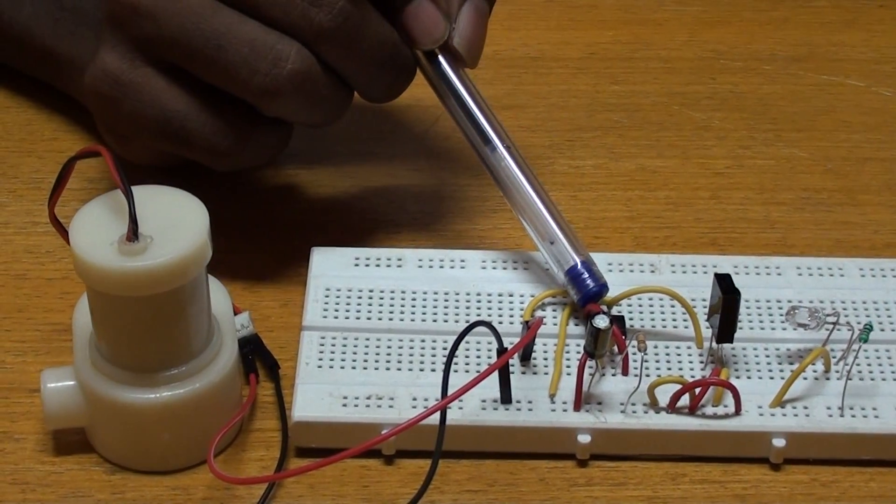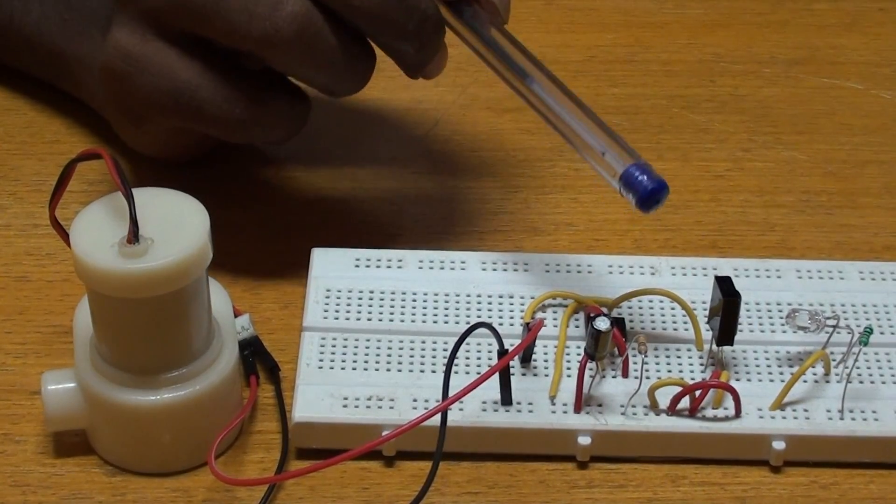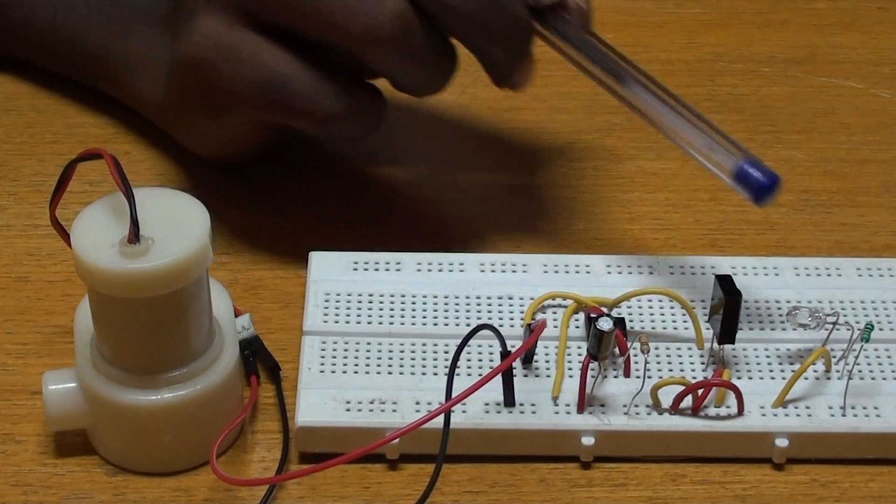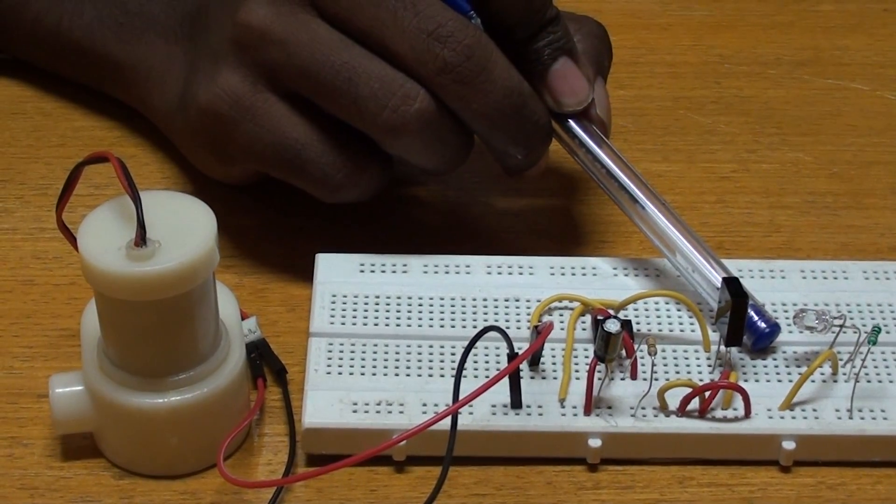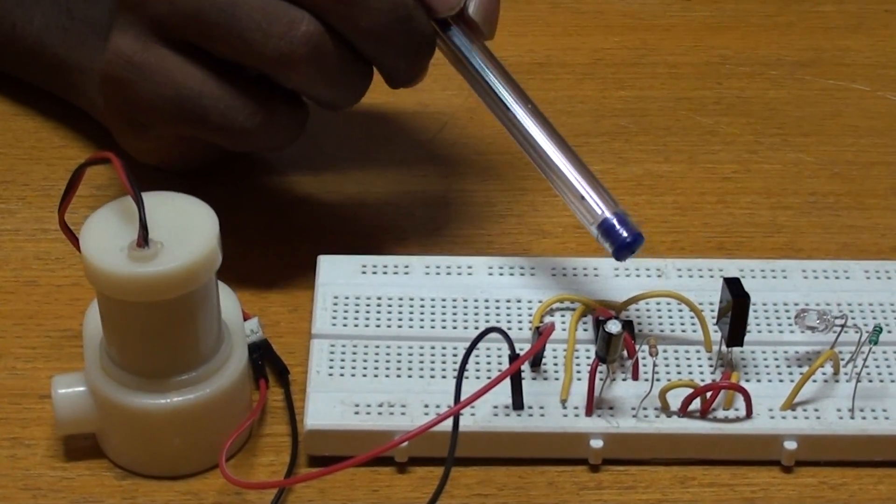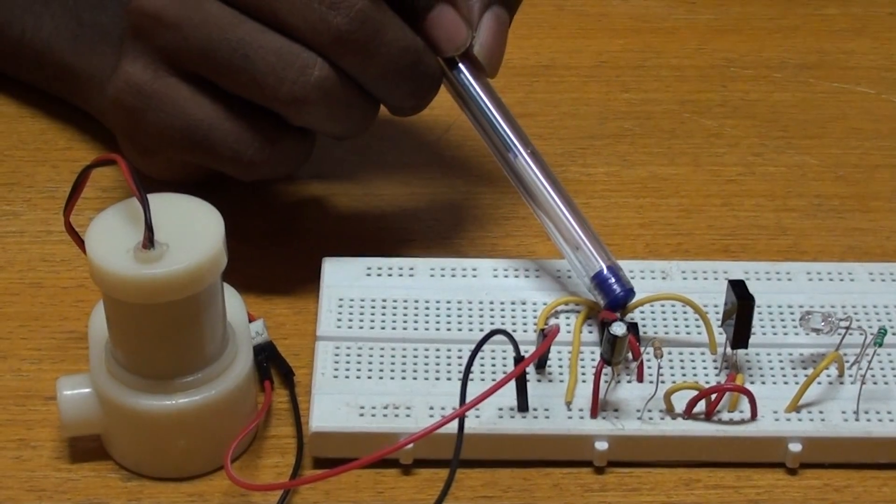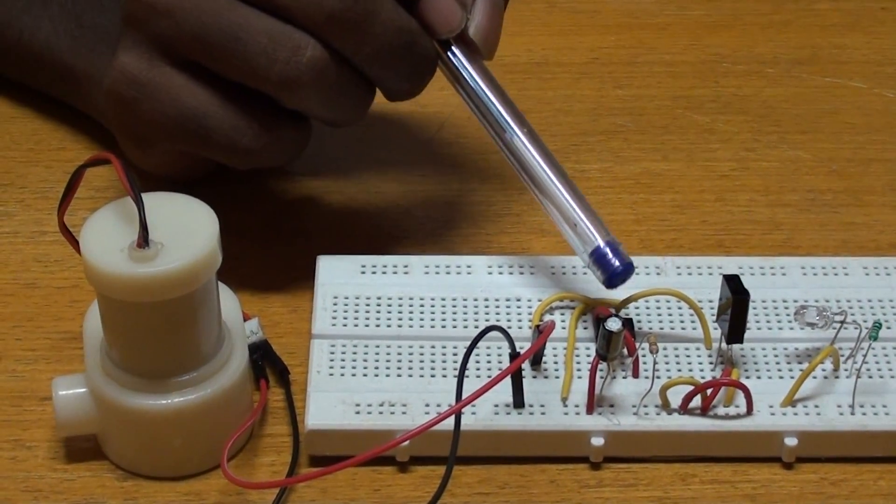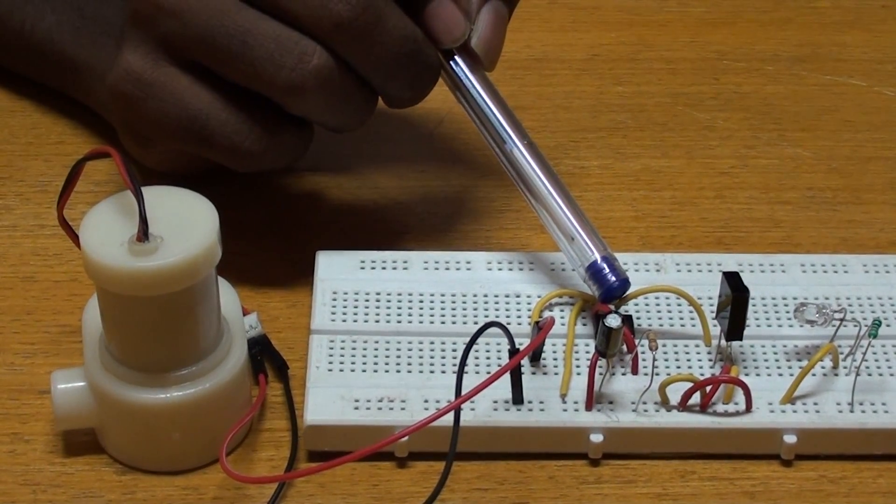Here is the 555 IC which works in monostable mode. It activates only when the trigger pin is triggered. When I interrupt the IR rays, the TSOP output goes to one-third of the supply voltage, which is sufficient to trigger the second pin. This makes the output of the 555 IC go high for a prescribed amount of time.